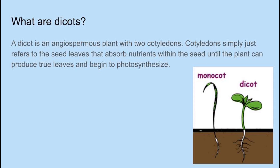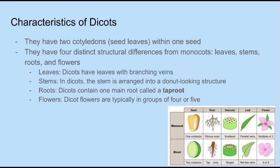For some characteristics of dicots, they have two cotyledons, which are the seed leaves within one seed. They also have four distinct structural differences from monocots, and these are leaves, stems, roots, and flowers.